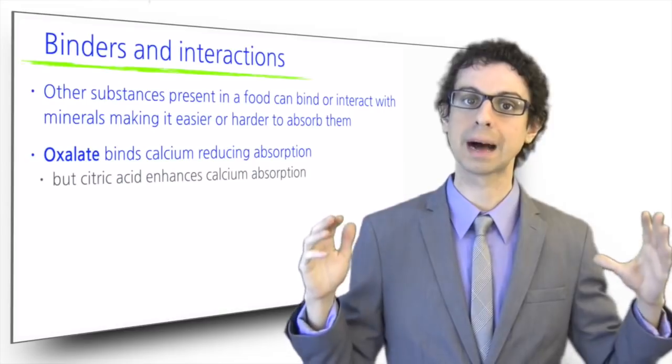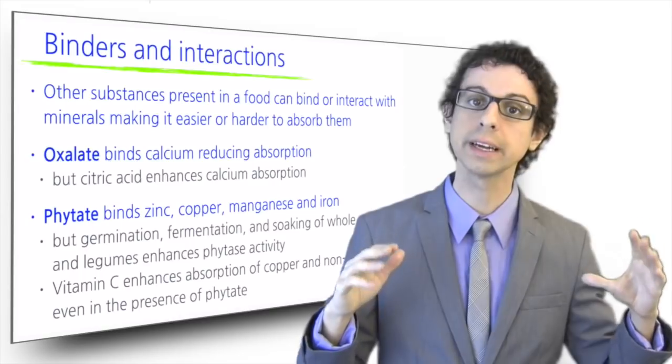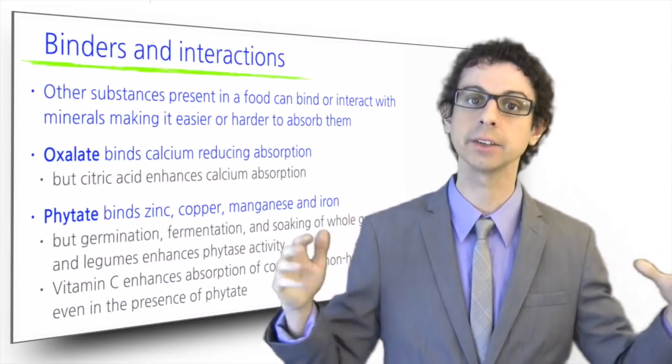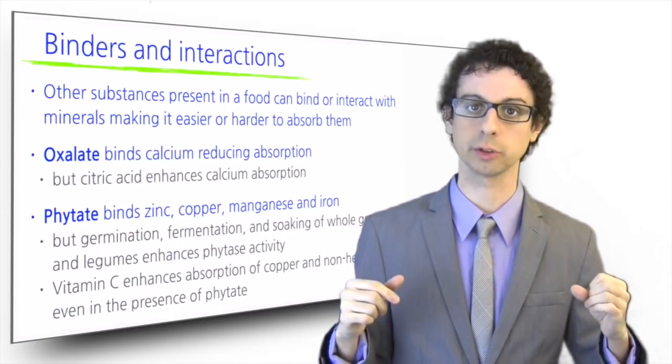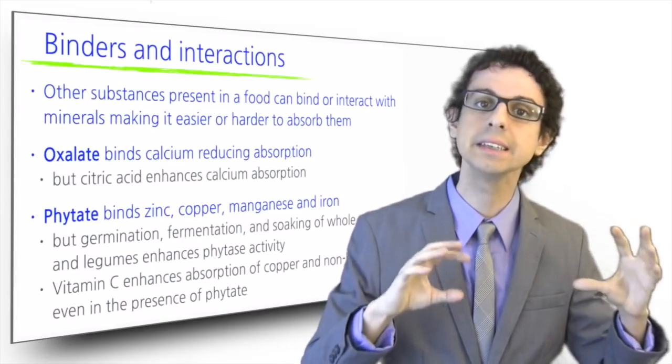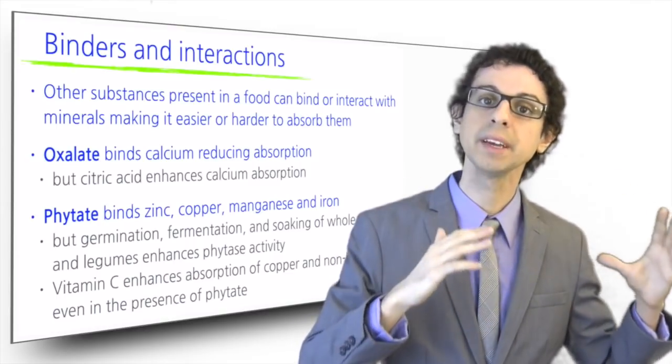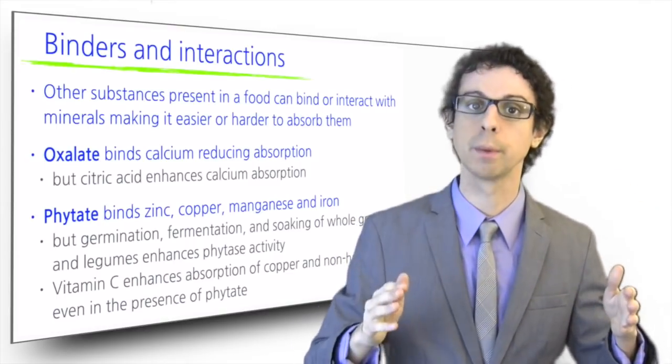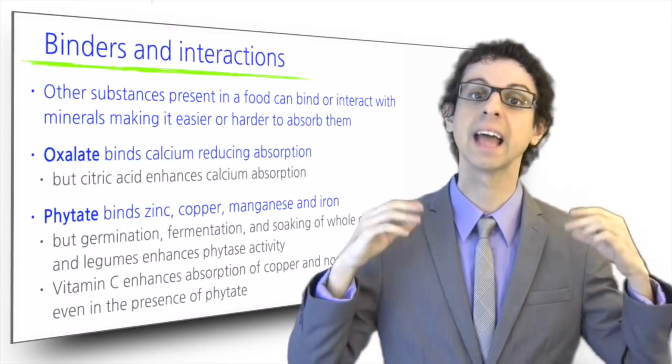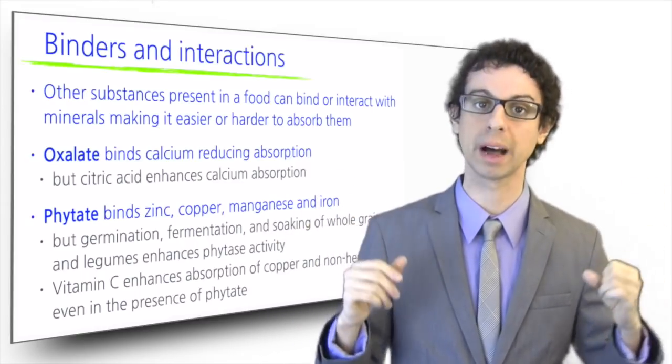Another typical mineral binder is phytate, or hexaphosphoric acid, which is present in whole grains and legumes and chelates zinc, copper, manganese and iron, thus reducing their absorption. Humans do not have the enzymes called phytases to free these minerals from phytate, although some bacteria do, so some of them in our gut may be able to chop them off. Germination, fermentation, and soaking of whole grains and legumes enhances natural phytase activity, making minerals more bioavailable.